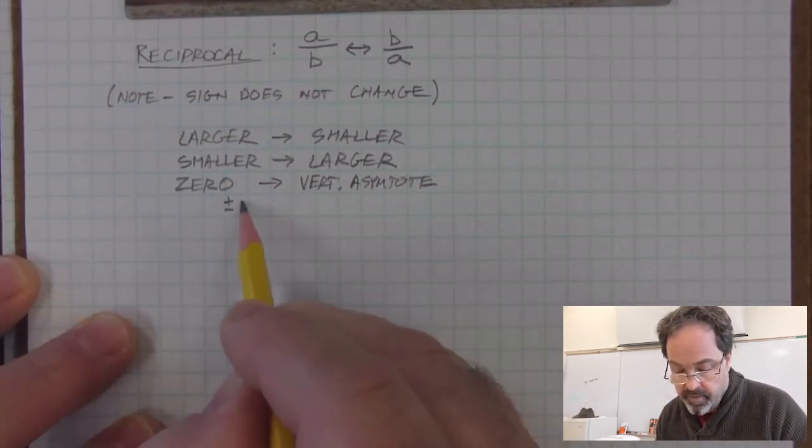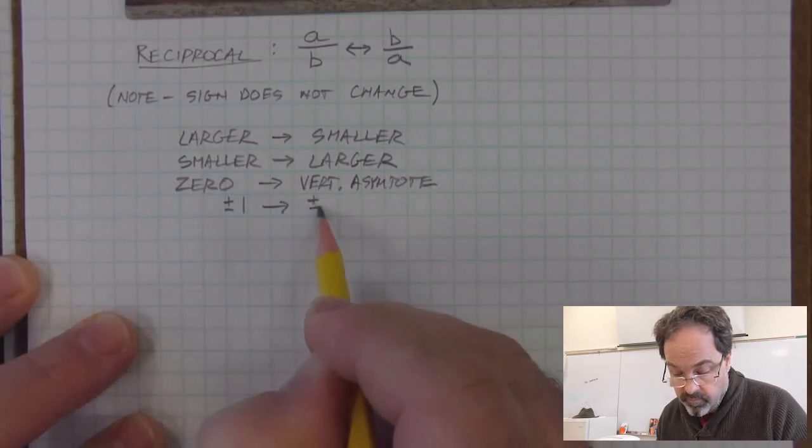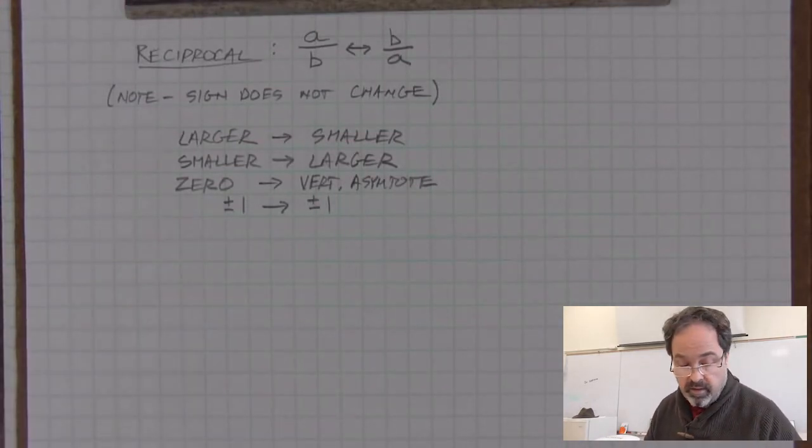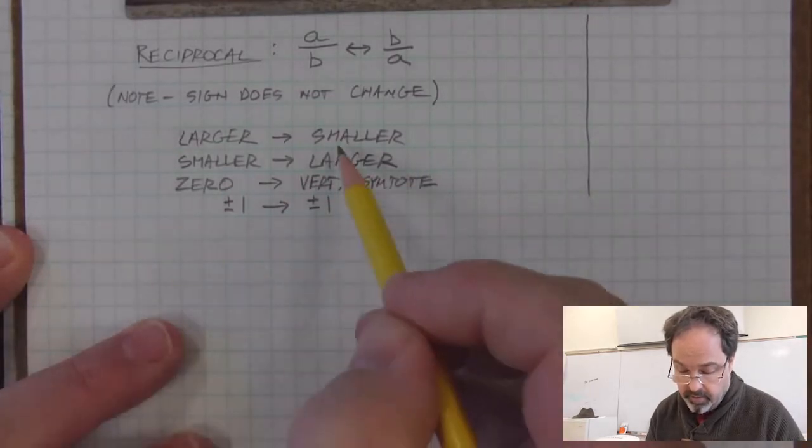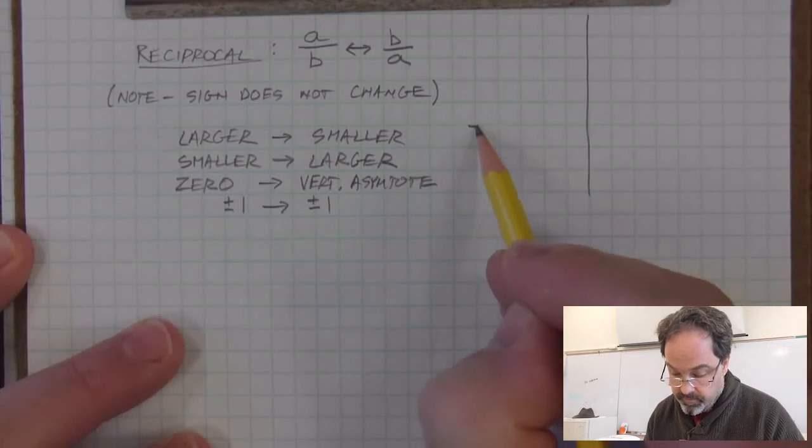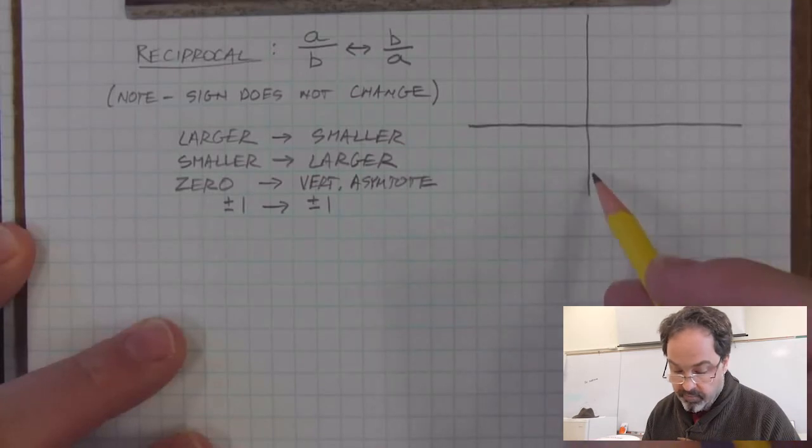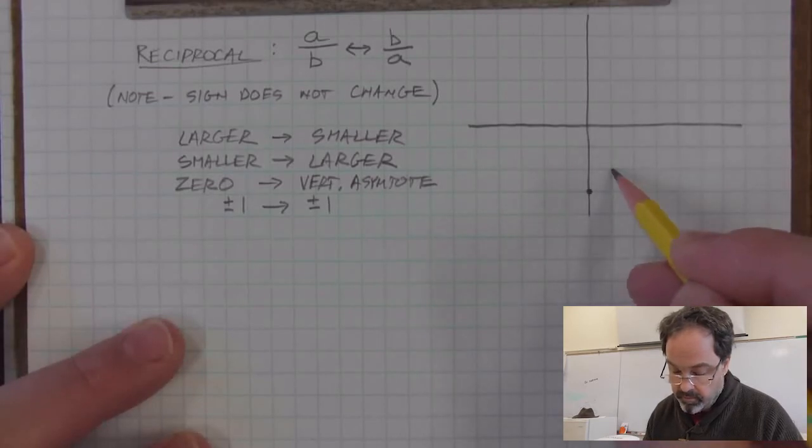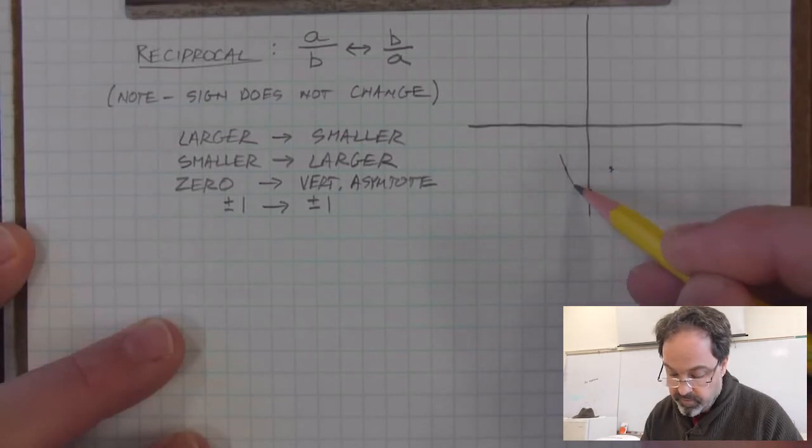And it's worth noting that the reciprocal of either positive or negative one is itself positive or negative one. So with this review of reciprocals, we can graph the reciprocal function very quickly, guided by these concepts. If we had a graph, let's practice with a fairly simple one, a transformed parabola.